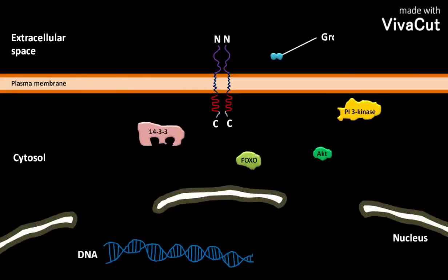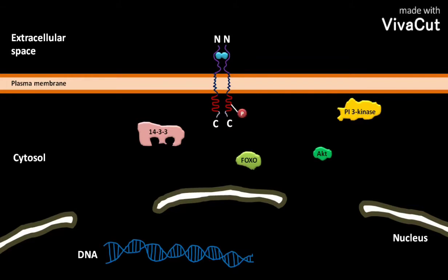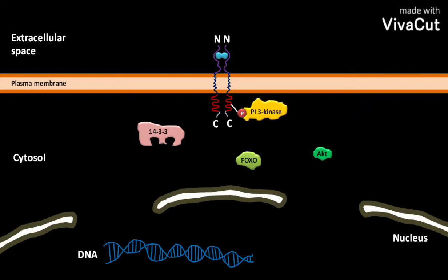When the growth factor is present, it binds to the extracellular domain of the receptor. This binding phosphorylates the cytosolic domain of the receptor. The PI3 kinase then binds to the phosphorylated cytosolic domain of the receptor.